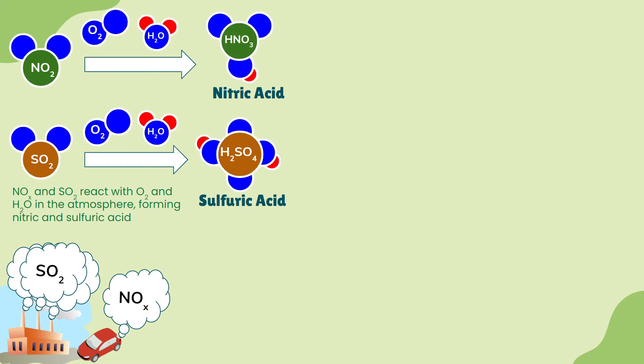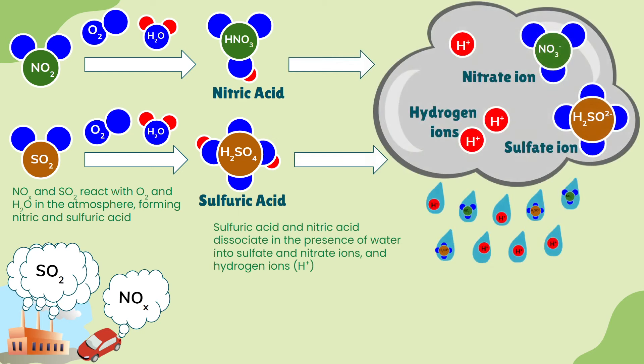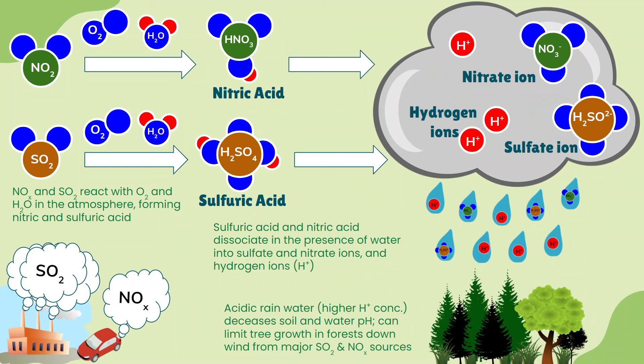You can see in the chemistry how SO2 and NO2 have combined with oxygen and water molecules to form new compounds — secondary air pollutants formed in the presence of oxygen, water, or sunlight. Then these acids dissociate in the presence of water, forming ions: the nitrate ion, the sulfate ion, and the dissociated hydrogen ion H+. Those H+ ions dissolve into water droplets that fall as rain, carrying them down onto natural ecosystems.